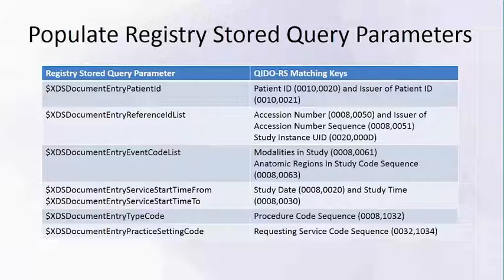If you read the profile, one of the core pieces of information towards the end is a detailed mapping table that shows you how to operate the XDS registry store query using the QIDO-RS matching keys. This table gives you information as a consumer: if you want to query something in XDS, which attributes you should be querying, and what the responsibility of the responder is to map it to the XDS registry query. What I'm showing here is a subset of the mapping. The profile itself has more information as well as details to help understand the mapping, because some mappings require additional information and context around the use case.